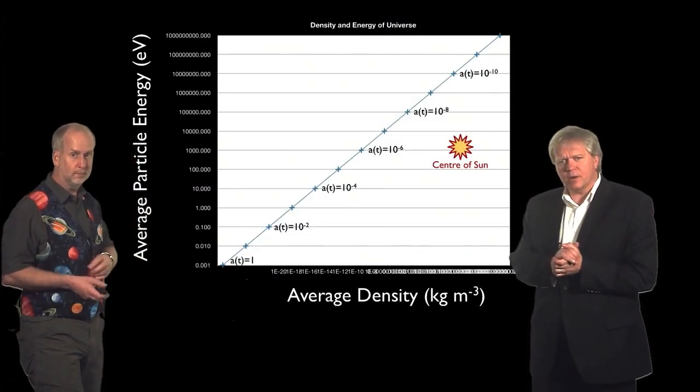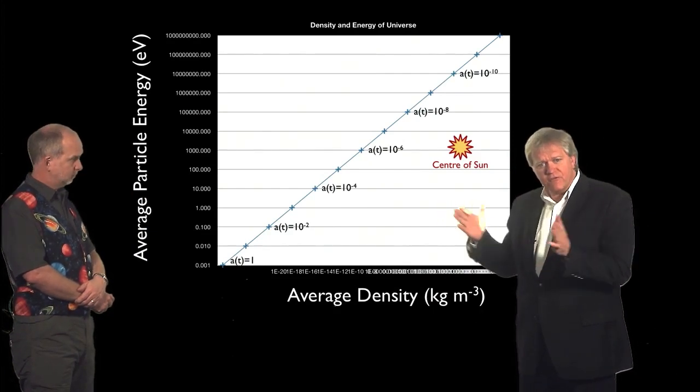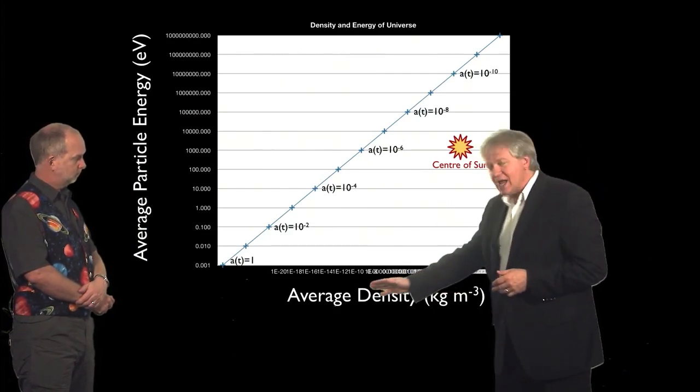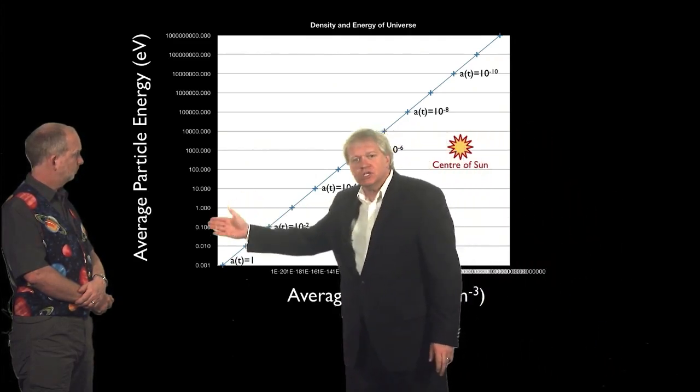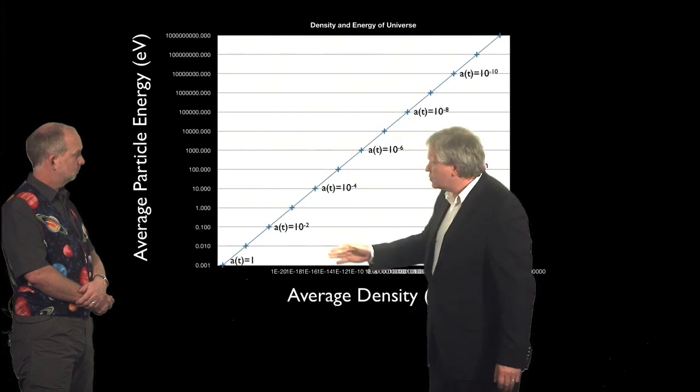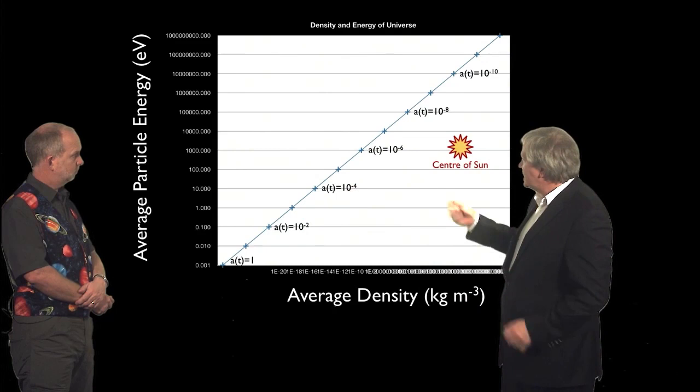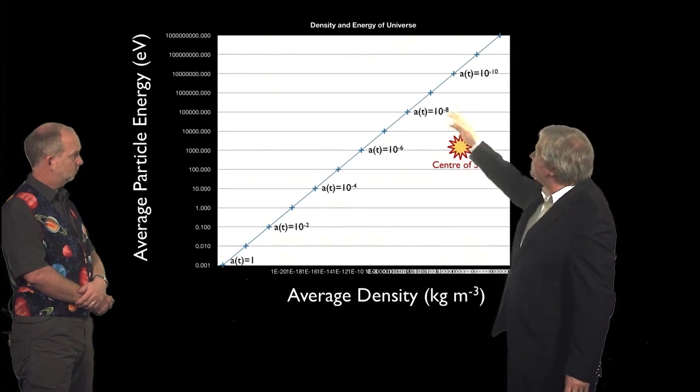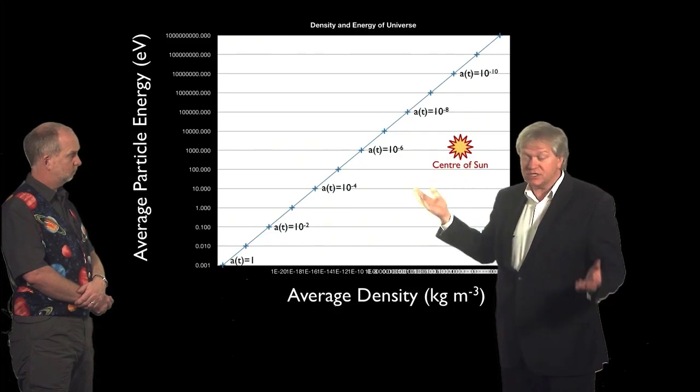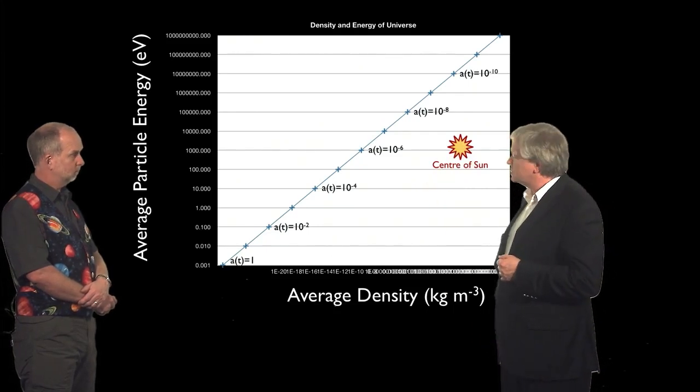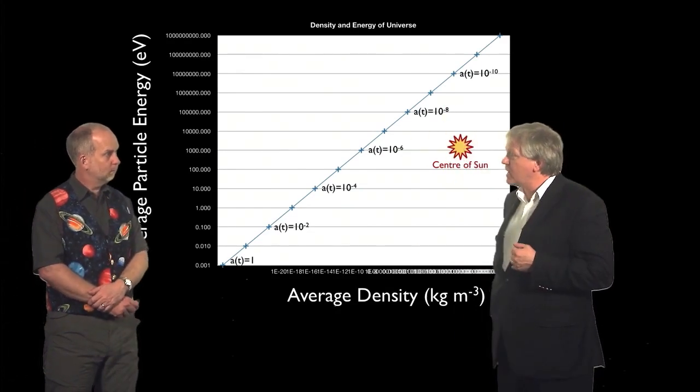So we know from our earlier work that when we go back in time, the scale factor becomes smaller, which leads to the average density of the universe increasing and the average energy per particle increasing. So as we go back in time, we can make a universe which is hotter and denser. And at some point, we can even exceed both the density and temperature of the center of the Sun, a place that we know nuclear fusion occurs.